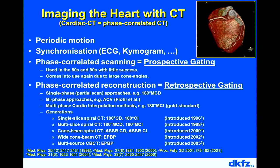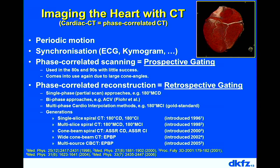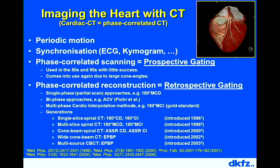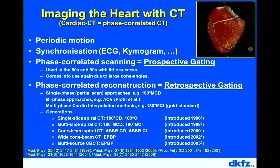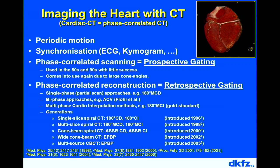Prospective gating was used in the 1980s and 90s with limited success; retrospective gating made a big success in cardiac CT, and today both options are used. Prospective gating is somewhat less robust: for patients with irregular heart rates or extra systoles that show up in the ECG but not as motion, a prospectively gated scan might be done at the wrong time position. For patients with irregular heartbeats, retrospective gating is preferred.